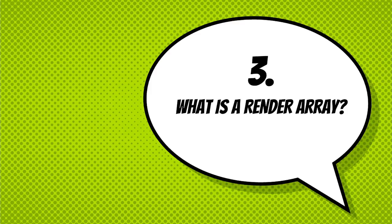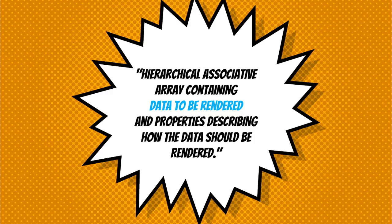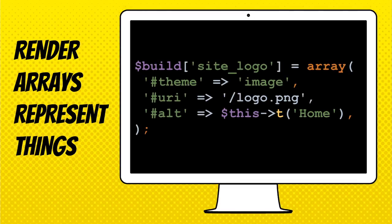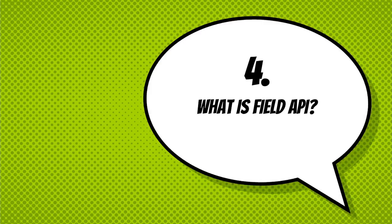Also behind Form API are render arrays. A render array is a hierarchical, associative array containing data to be rendered and properties describing how the data should be rendered. Render arrays represent things — it's a way in PHP to describe what you want to output. This is an example of the site logo from one of the base themes in Drupal, where you have a theme property, say you want to render an image, giving it a URI and alt text.